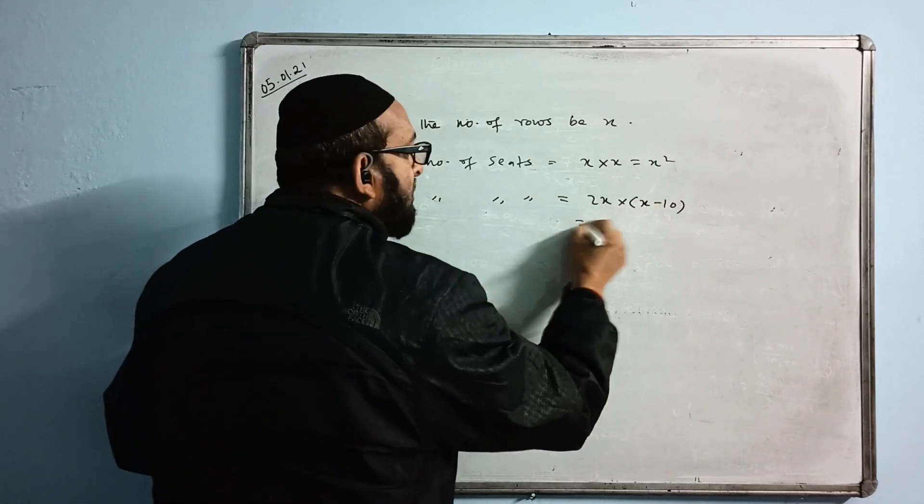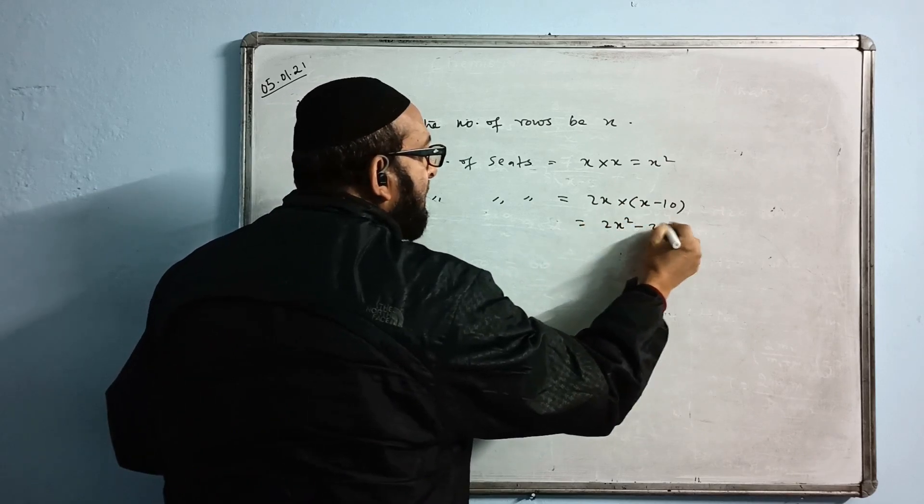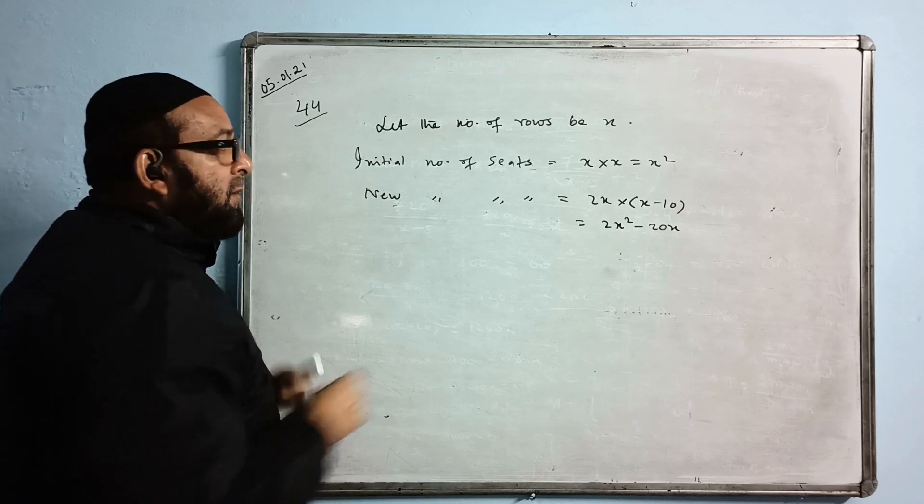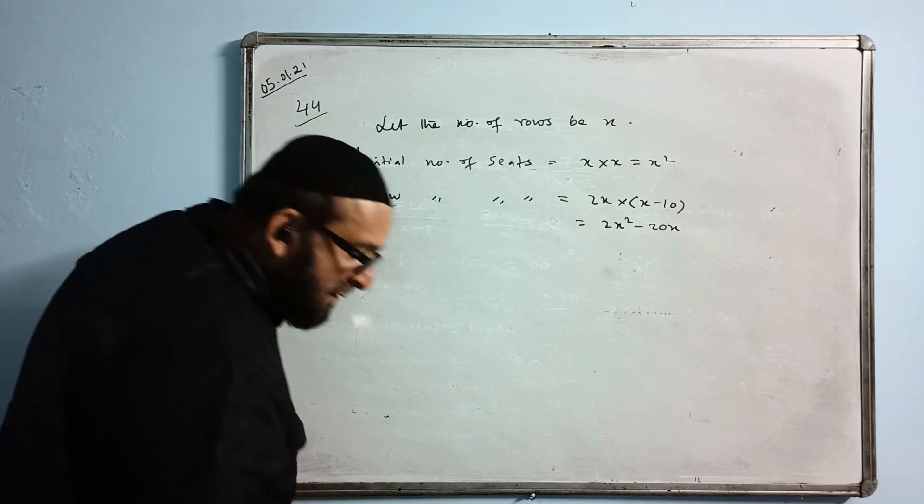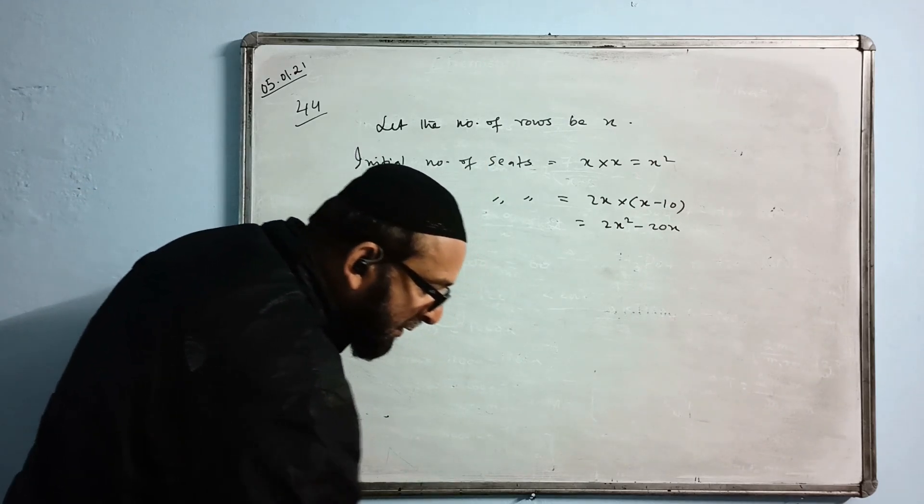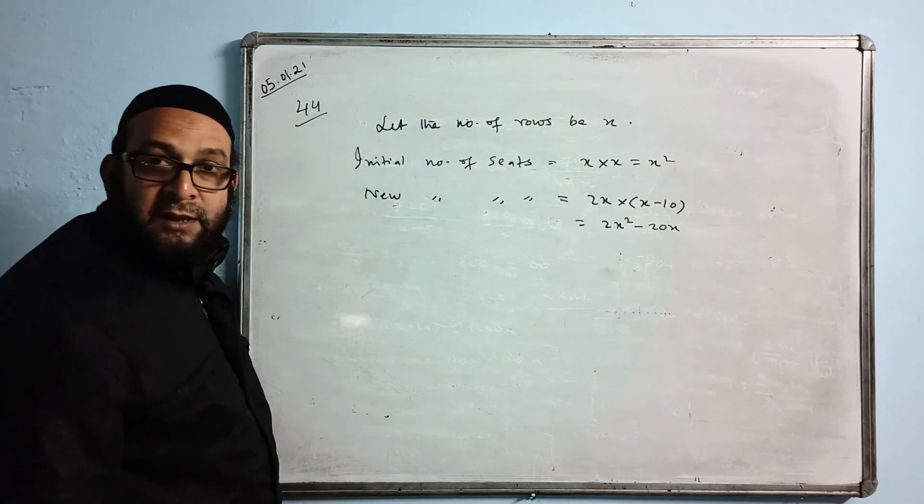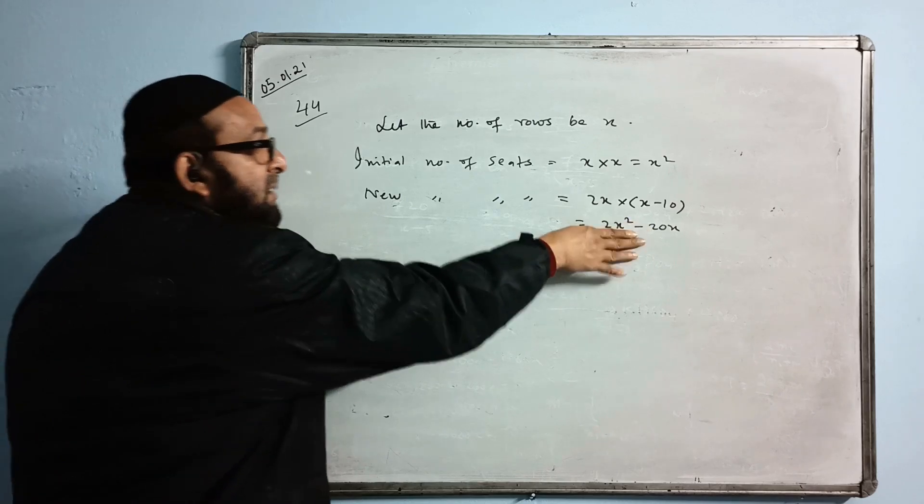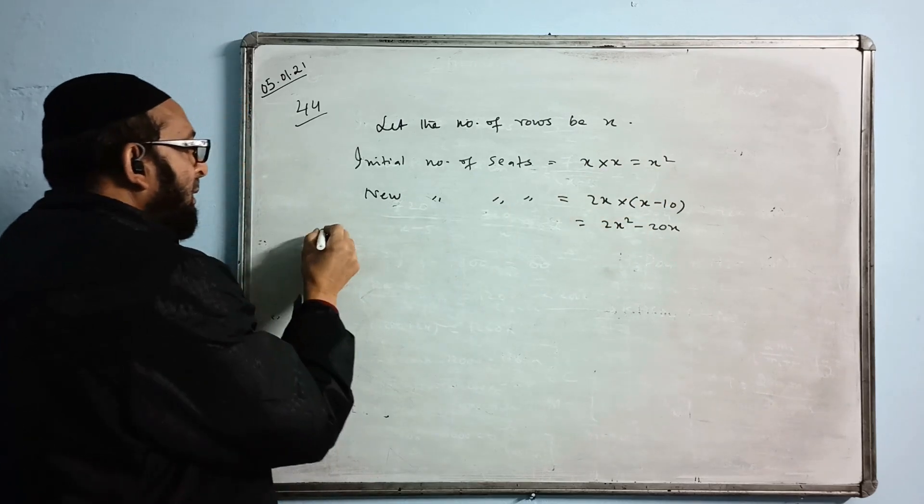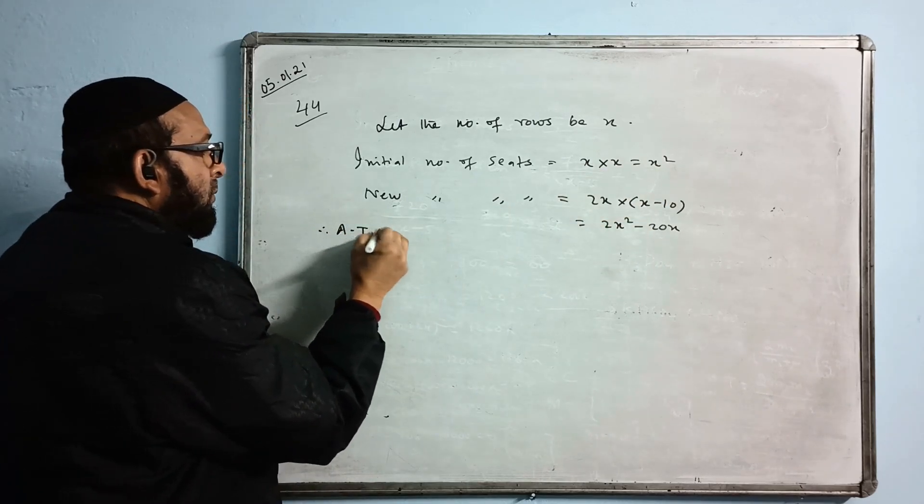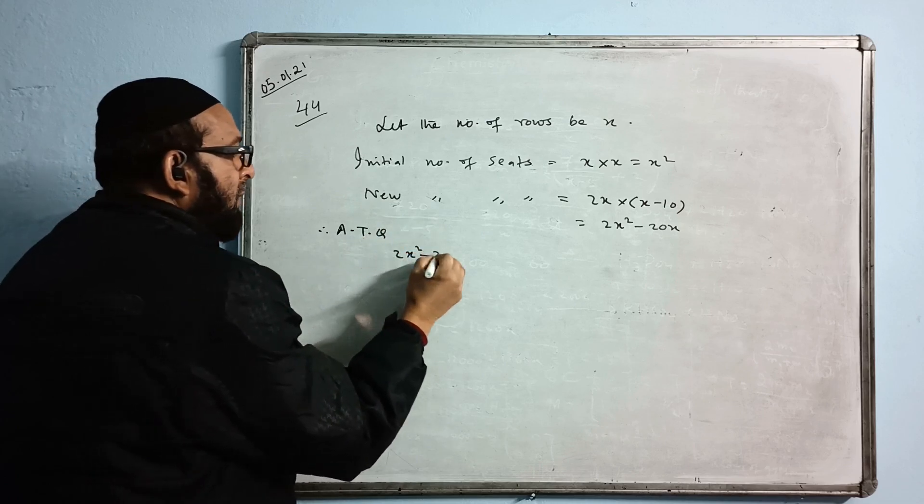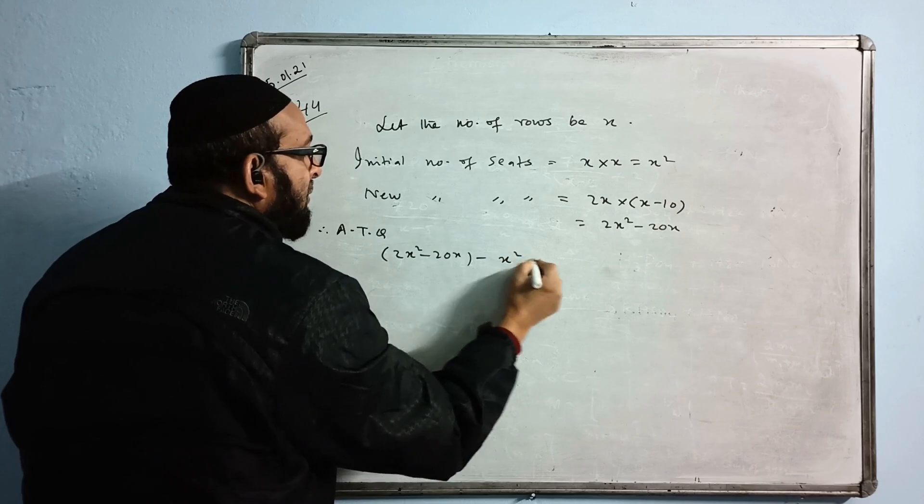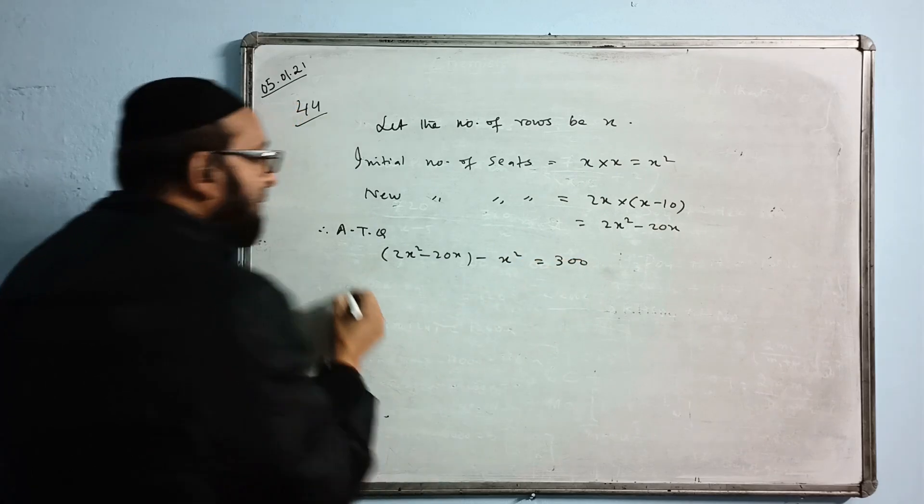Let us multiply this one. We get 2X squared minus 20X. Now the difference in the number of seats is given: 300. The number of seats increased by 300. The new arrangement has more seats. Therefore, 2X squared minus 20X minus initial number of seats equals 300. I think after this you will solve.